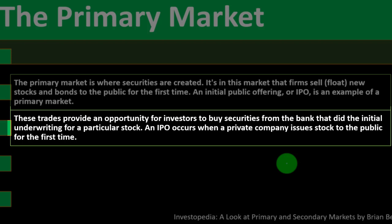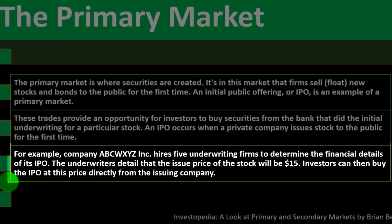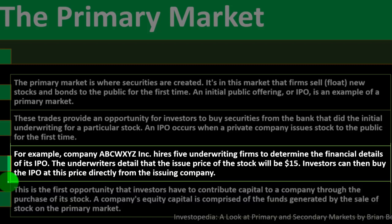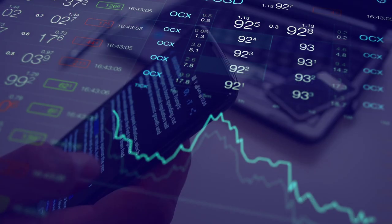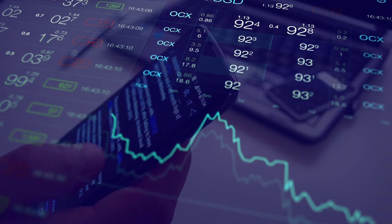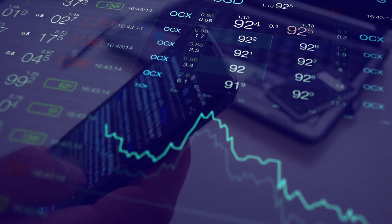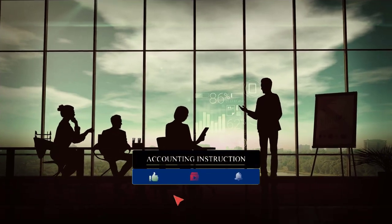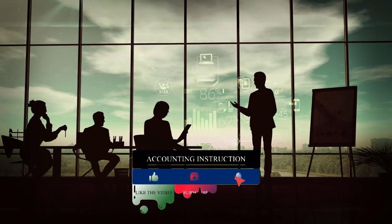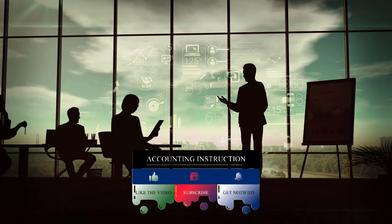An IPO occurs when a private company issues stock to the public for the first time. For example, company ABCWXYZ Inc. hires five underwriting firms to determine the financial details of its IPO. The underwriters determine that the issue price of the stock will be $15. Investors can then buy the IPO at this price directly from the issuing company. The stocks represent a portion of ownership — an equity interest in the corporation — in exchange for funds that go to the company to help it grow.